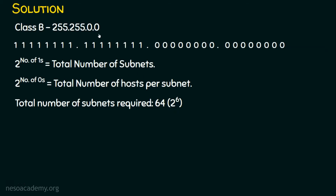We know it's a class B subnet mask, and we are going to convert it into a classless subnet mask. The bit changes will be only in the 3rd and 4th octets. If this were a host requirement problem, we would reserve 6 zeros from the right. But since it is based on network requirement, we are going to reserve 6 ones — not from the right, but from the left, because a valid subnet mask consists of consecutive ones followed by consecutive zeros.